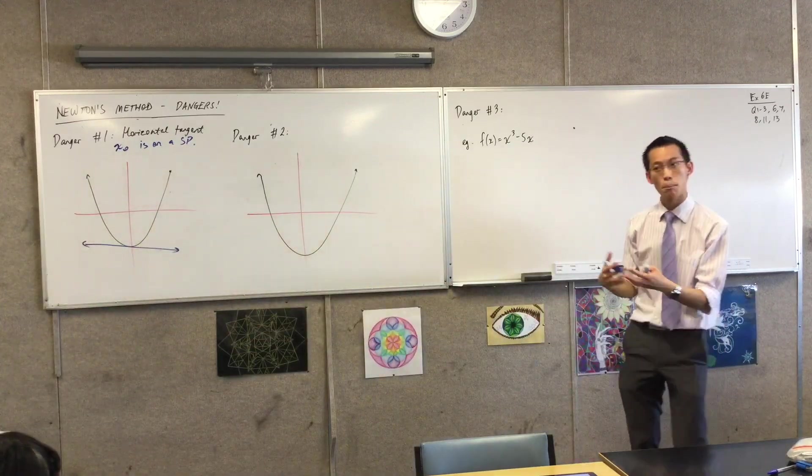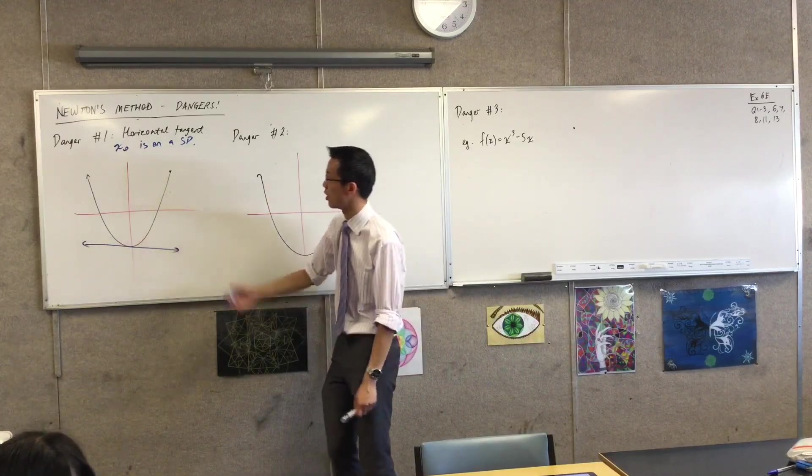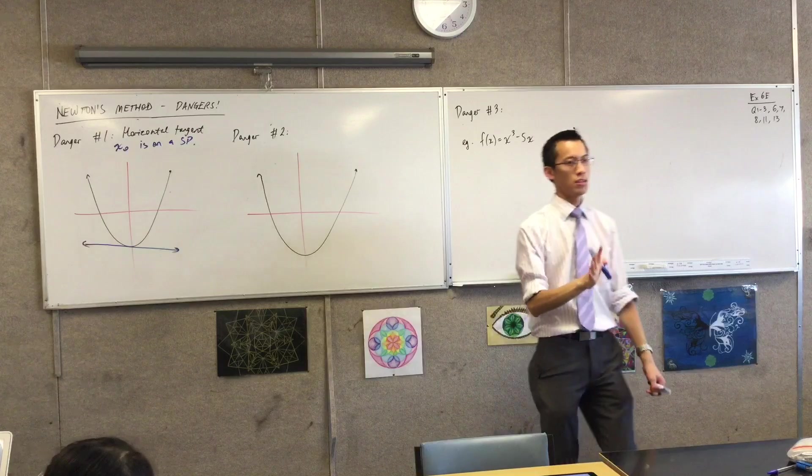You see how calculus is involved here? If you choose x0 poorly, with regard to the geometric features of the graph, of the curve, then you're in trouble. If x0 is on a stationary point, you're stuck.